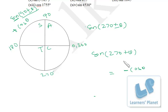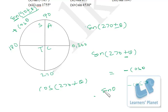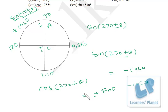For cos(270 + θ): since you're adding/subtracting from 270, cos converts to sine, so write sine θ. Now 270 + θ is in the fourth quadrant where cos is positive, so put a positive sign — it's positive sine θ. Be very careful: do not write positive cos θ, that would be wrong. The function converts to sine θ with a positive sign.